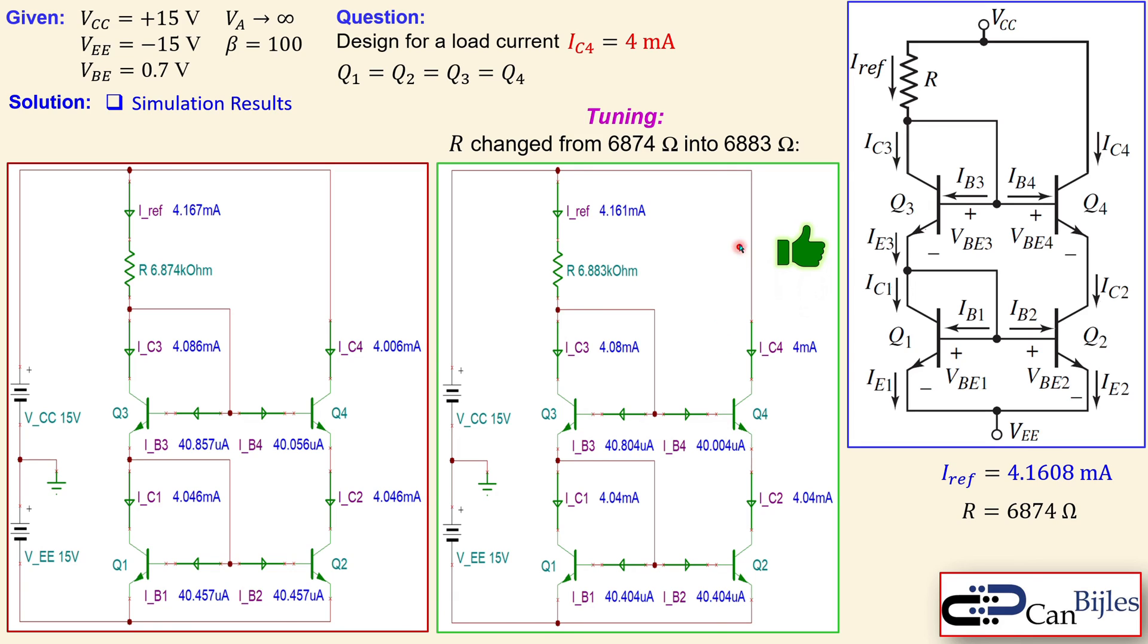We have designed for a specific load current, determined first the required formula which relates Iref to the load current, and determined the resistor to create this current. After that, we tuned the resistor to get the exact 4 milliamps we wanted for our load current. If you have any questions or comments about this example, please let me know. I will try to answer them as soon as possible. See you next time in another video. Take care.